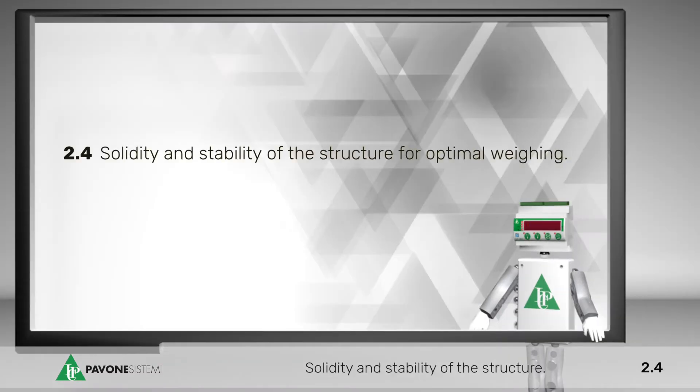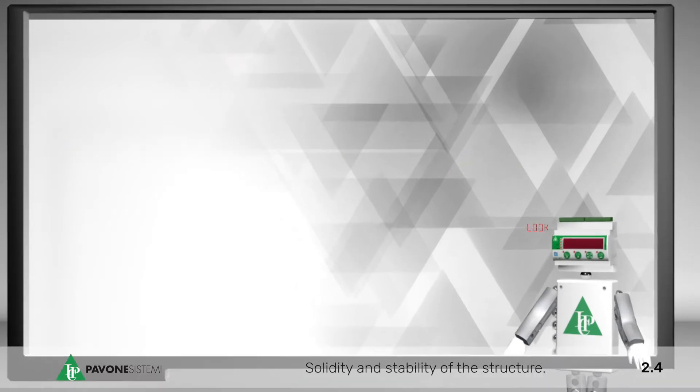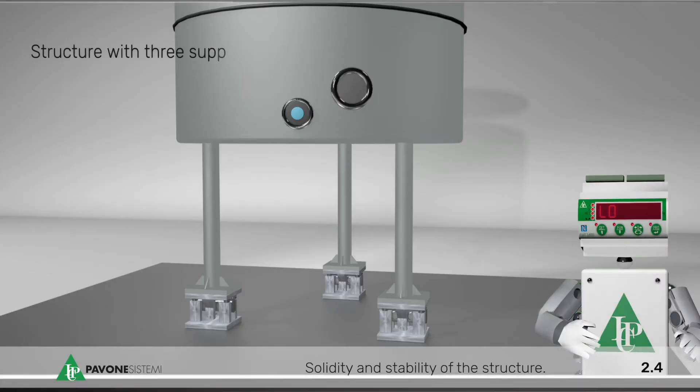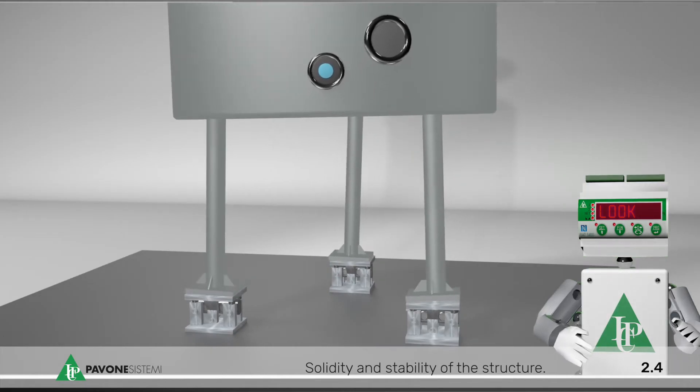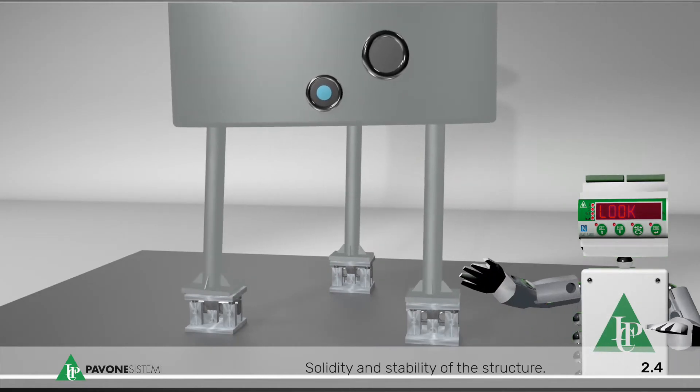Solidity and stability of the structure for optimal weighing. Structure with 3 support legs: This condition offers an advantage as regards to the correct distribution of the load.